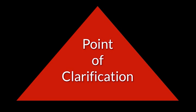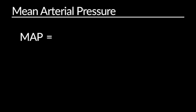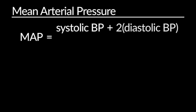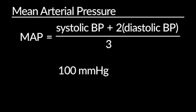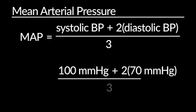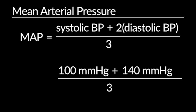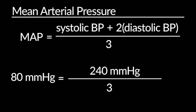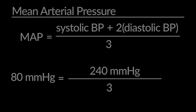Point of Clarification: The mean arterial pressure can be calculated by taking the systolic blood pressure in millimeters of mercury, adding two times the diastolic blood pressure, and dividing this number by three. For example, if your patient has a systolic blood pressure of 100 mmHg and a diastolic blood pressure of 70 mmHg, their mean arterial pressure would be 80 mmHg. We'll discuss this in a little bit more detail later.